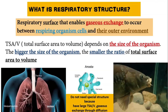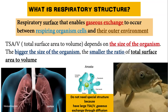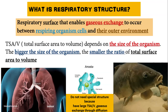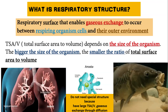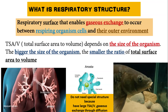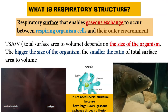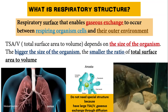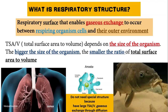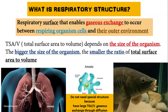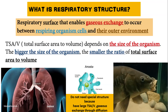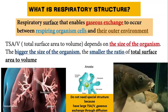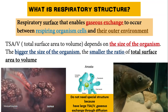So what is a respiratory structure? It is the structure that enables gas exchange to occur between the cells and their outer environment. As we have learned before, unicellular organisms such as amoeba do not need a special structure because they have a large ratio of total surface area to volume, so gas exchange can occur through diffusion.